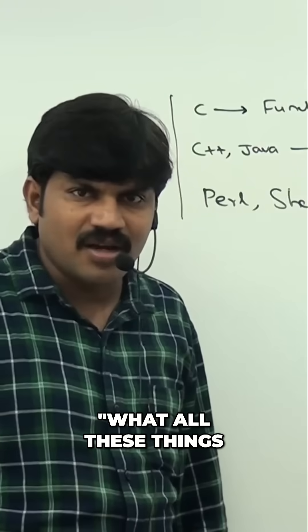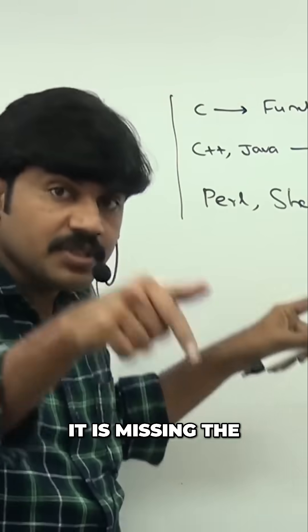C is missing the benefits of object-oriented because it is a functional programming language. So if I ask C, can you please provide support for inheritance, polymorphism, encapsulation? C person is going to tell, what all these things? I don't know, nonsense. Because this person is not object-oriented. It is missing the benefits of object-oriented programming.